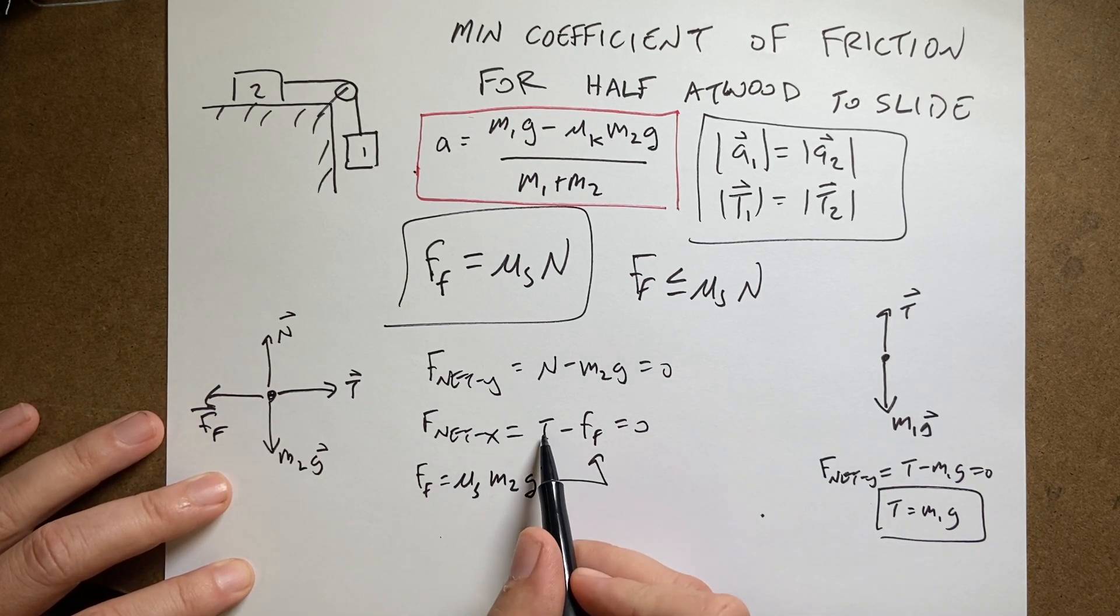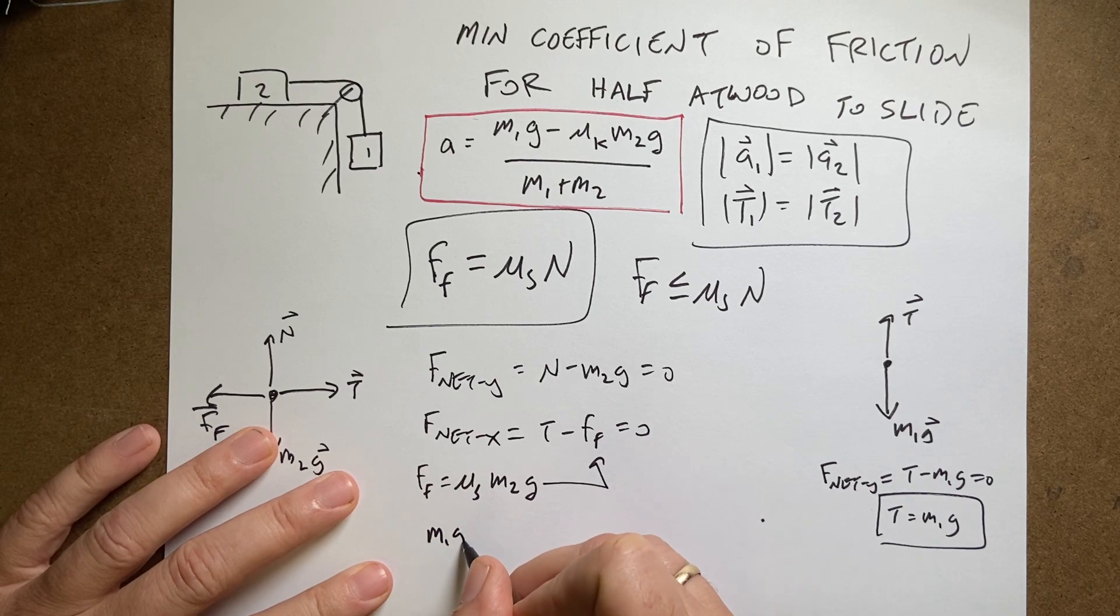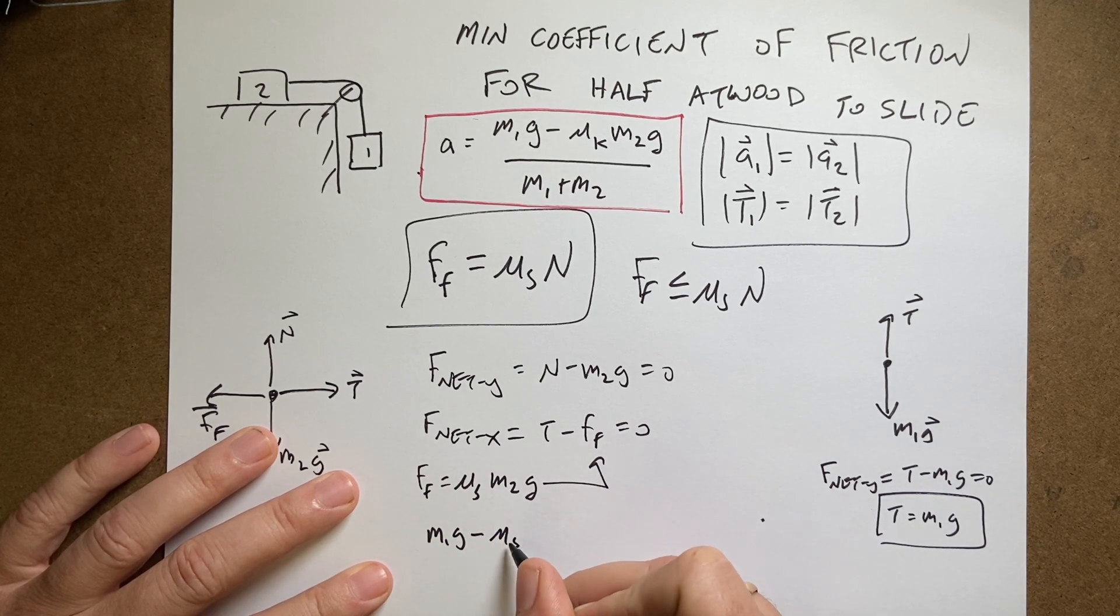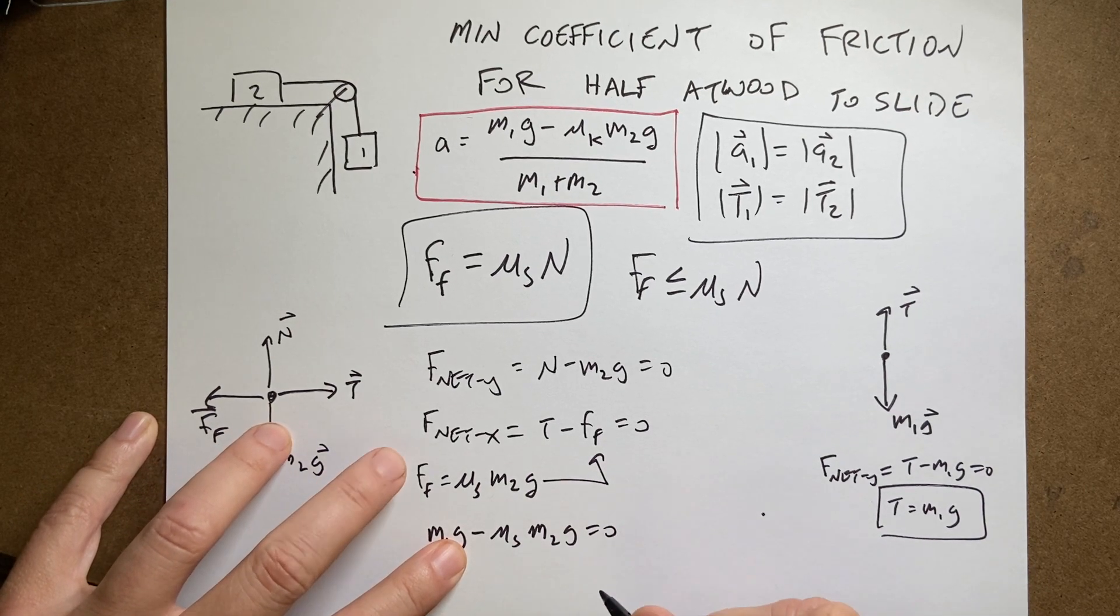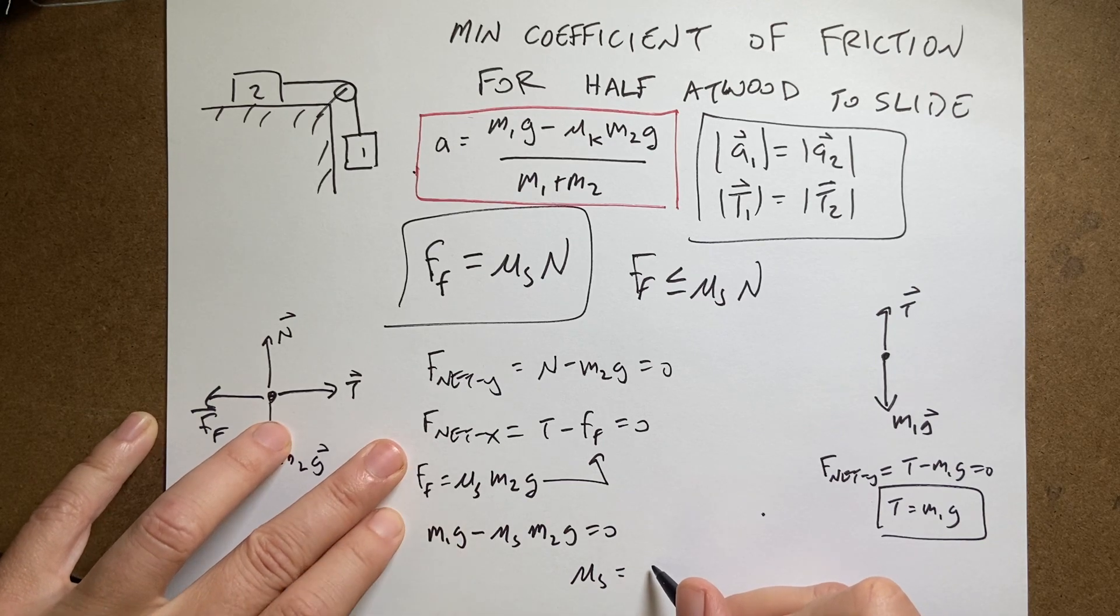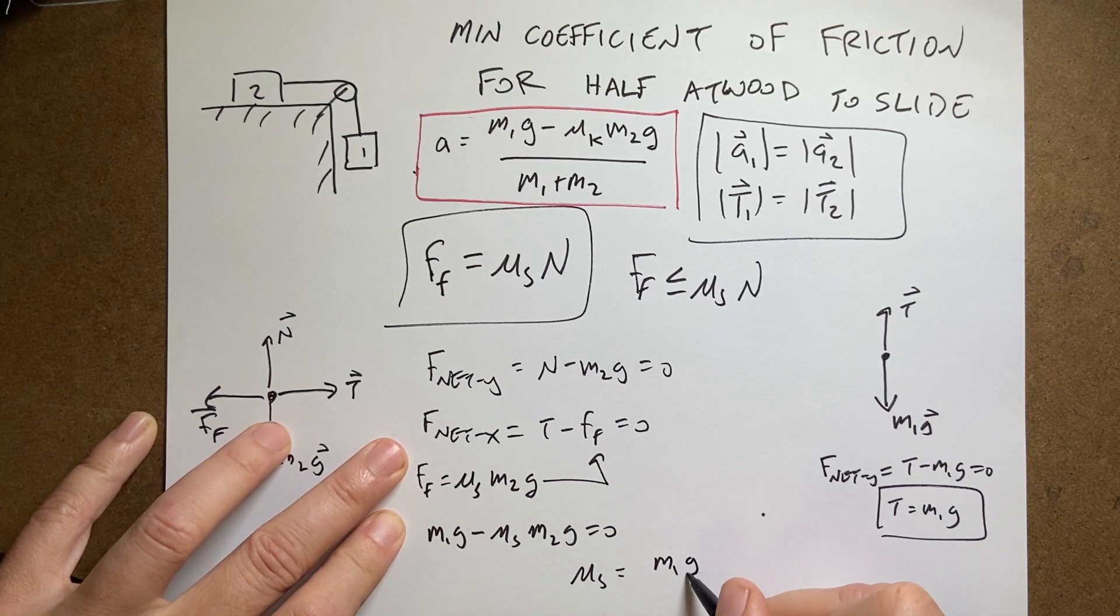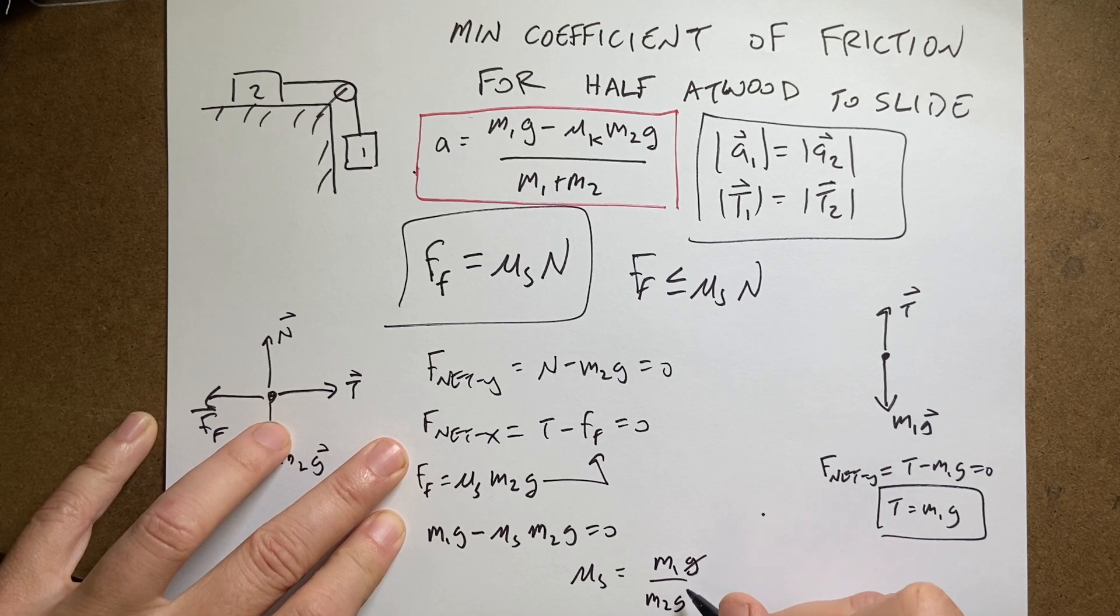Okay, so now I can put that in up here. I get m1g minus μs m2g equals zero. I can solve this for the coefficient. I get μs equals m1g divided by m2g. The g's cancel.